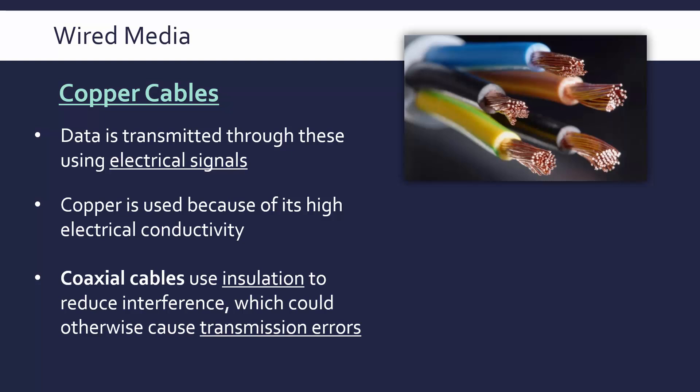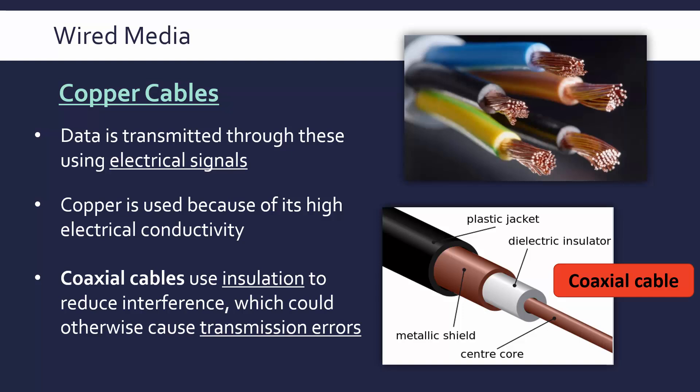Interference can happen with wireless connections too — Bluetooth and Wi-Fi can interfere because their radio waves have similar frequencies and can collide, causing errors. To mitigate interference in copper cables, there is a more specific type called a coaxial cable, or coax, which wraps a lot of insulation around the copper to prevent interference between separate wires. This is a little more expensive but can improve performance.